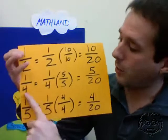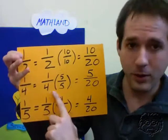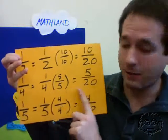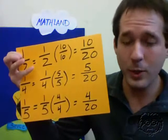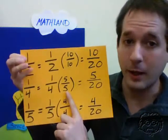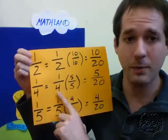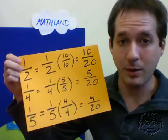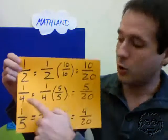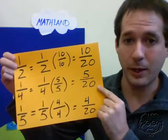Next, let's look at 1 fourth. 1 fourth times 5 over 5 equals 5 20ths. We chose 5 over 5 because 4 times 5 is 20, and we want to express 1 fourth as an equivalent fraction with a denominator of 20. So 1 fourth equals 5 20ths.